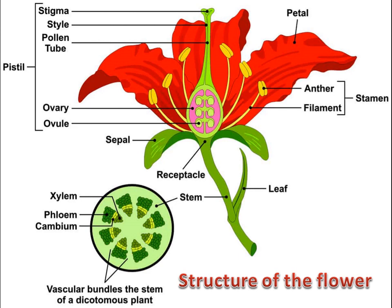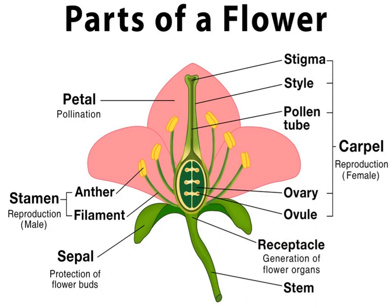When you examine a flower, you will notice that it has a thin pedicle that ends in a swollen part carrying the floral leaves in four different floral whorls. The receptacle is the swollen part upon the flower pedicle on which the floral leaves exist. The calyx is the first whorl of the floral leaves. It consists of a group of green leaves, and each leaf is called a sepal. The calyx protects the inner parts of the flower, especially before blooming.